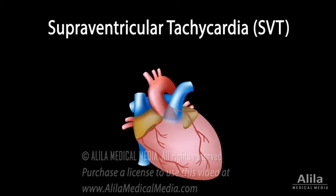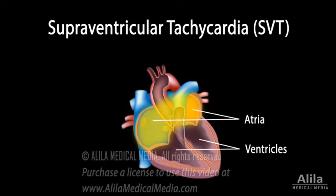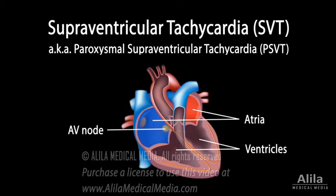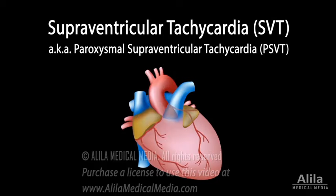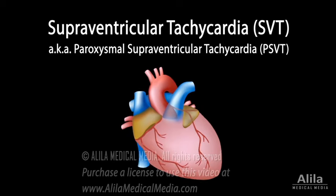Supraventricular tachycardia refers to rapid heart rhythms that originate above the ventricles, in the atria or AV node. It is also called paroxysmal supraventricular tachycardia for its episodic nature — the rhythms come suddenly and go spontaneously.